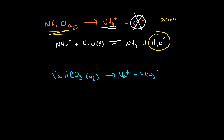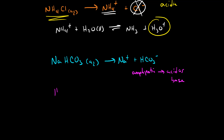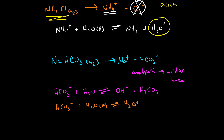Bicarbonate is one of these amphiprotic molecules — amphiprotic means it can be an acid or a base. It has the ability to react with water and accept a proton, or react with water and donate a proton. So there are two possible reactions bicarbonate can undergo: it can react with water to produce hydroxide and generate carbonic acid, or it can react with water in an acid dissociation reaction to produce hydronium and its conjugate base, carbonate. These are the two possible reactions — acid dissociation or base dissociation.